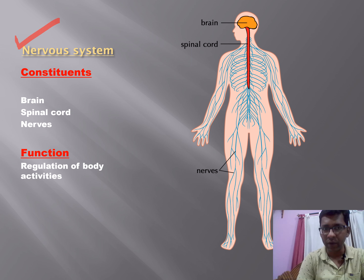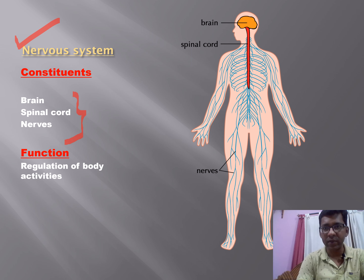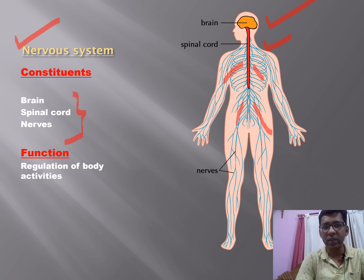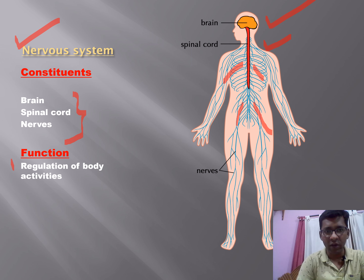The nervous system is related to nerves. Its constituents are the brain, spinal cord, and nerves. The brain and spinal cord run through the vertebra down towards the coccyx — though it ends before the coccyx — and nerves spread from the spinal cord throughout the body. The function of this system is to regulate body activities.